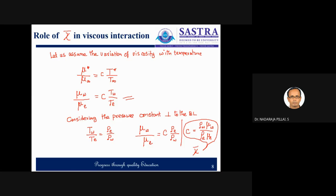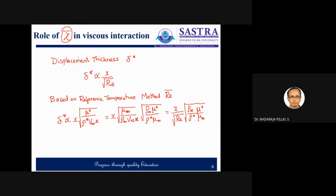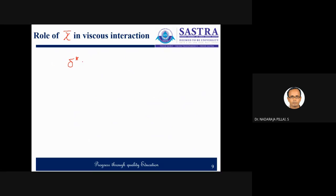Now let us substitute these above equations into the displacement thickness expression. Delta star is proportional to x divided by the square root of Reynolds number, multiplied by the square root of C times T*/T∞.